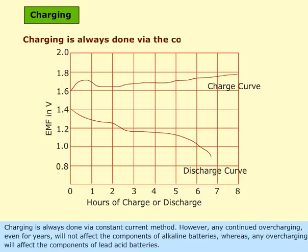Charging is always done via constant current method. However, any continued overcharging even for years will not affect the components of alkaline batteries, whereas any overcharging will affect the components of lead acid batteries.